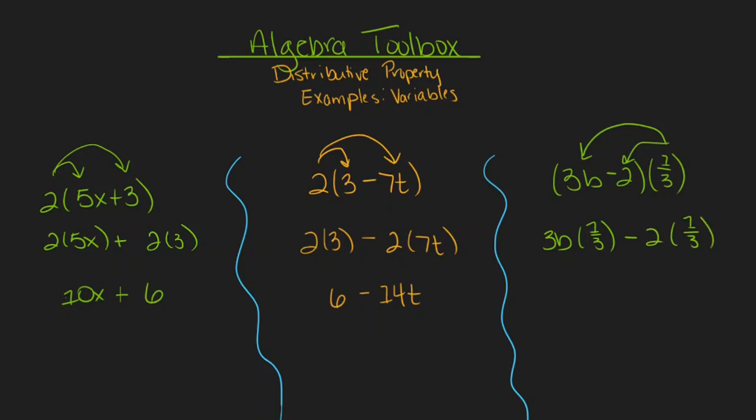3b times one-third would be 3b over 3, and then the threes would cancel out because any number over itself is just equal to 1, and 1 times b would just leave us with b. So we can consider this as b. I'll keep my subtraction symbol, and then 2 times one-third would be two-thirds. So I can also write this expression as b minus two-thirds.